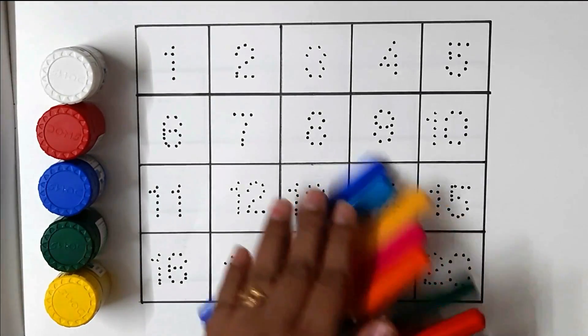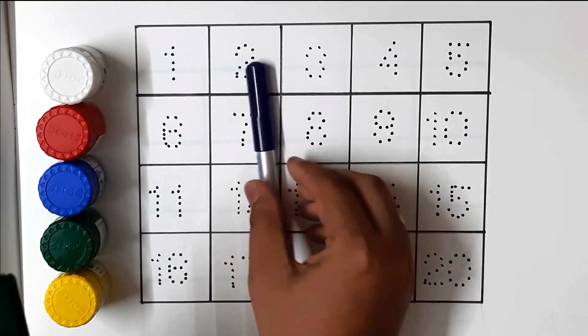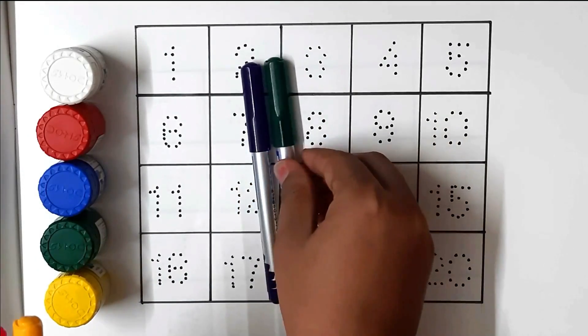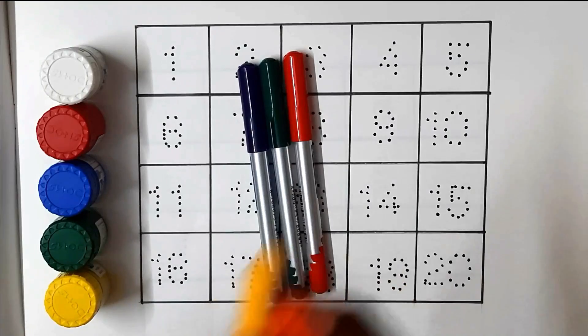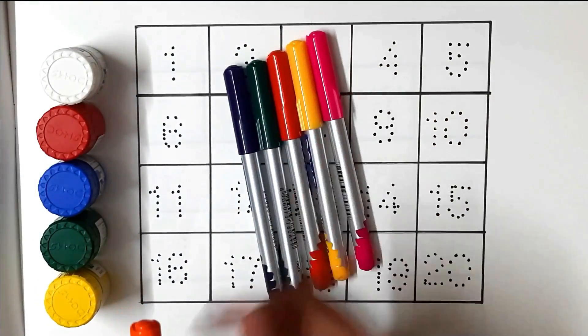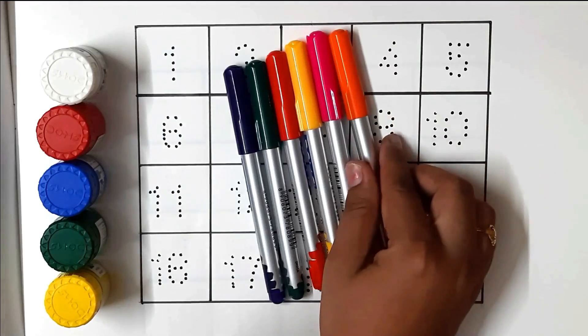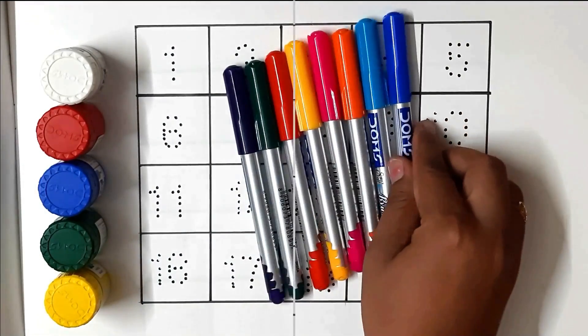Colors: navy blue color, green color, red color, yellow color, pink color, orange color, sky blue color, blue color.